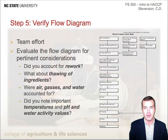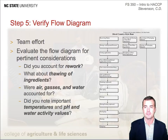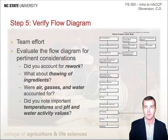Keep in mind that the flow diagram will be used to make informed decisions in your next phase of the HACCP plan, which is hazard analysis. Therefore, make any pertinent changes as needed. For example, ask whether you accounted for reworking, necessary ingredient thawing processes, or the use of water, air, or gases. It is also important to note pertinent conditions such as temperature, pH, and water activity of the product.